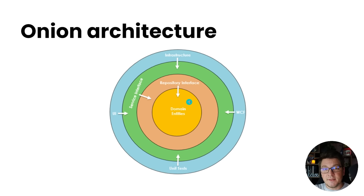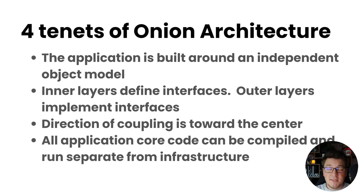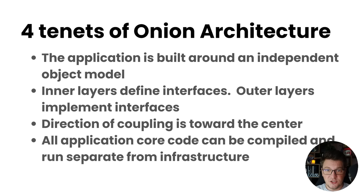The infrastructure layer could also reference the repository interfaces, and this will most definitely be the case because it will have to hold the implementations — but it can also reference the domain entities. Jeffrey Palermo also coined the four tenets of the onion architecture. The first is that the application is built around an independent object model — these are your domain entities. Second, inner layers define interfaces; outer layers implement interfaces. Third, the direction of coupling is towards the center.